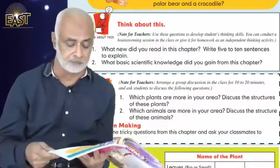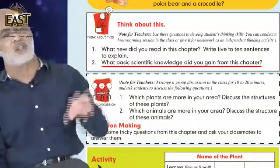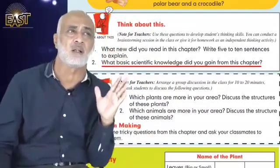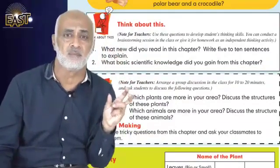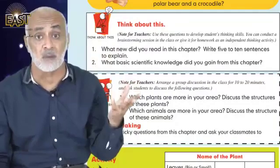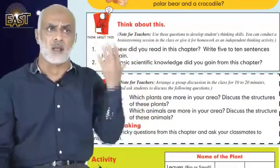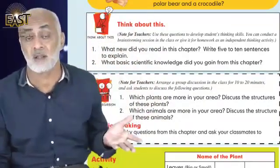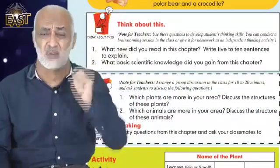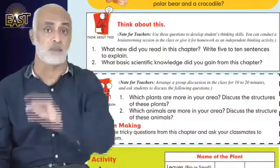What basic scientific knowledge did you gain from this chapter? Out of all the things you learned, what is the most basic point? It could be about plants — their parts or their cycle — or about animals — their body parts or their life cycle — or it could be about amphibians. Whatever basic scientific point you found, write that down and then discuss it with your teacher.